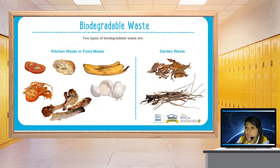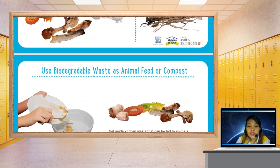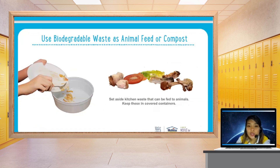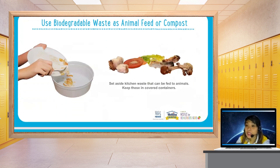Garden waste includes leaves falling from trees and twigs from trees as well. We could use biodegradable waste as animal feed or compost. Set aside kitchen waste that can be fed to animals like pigs, and keep it in covered containers.